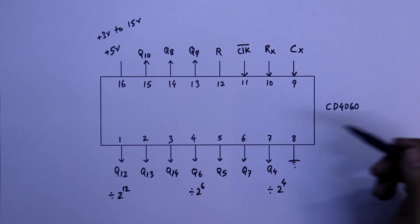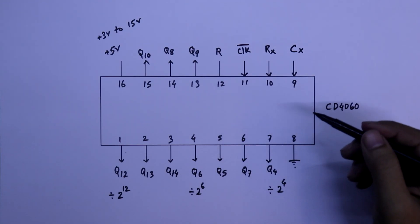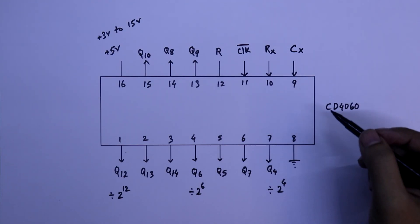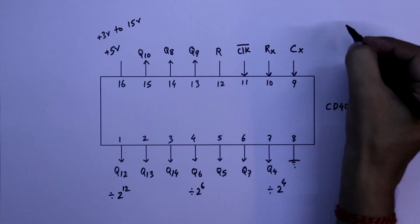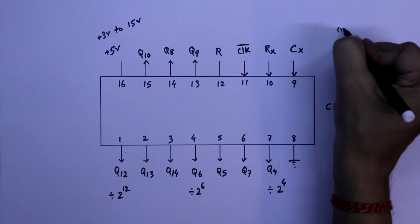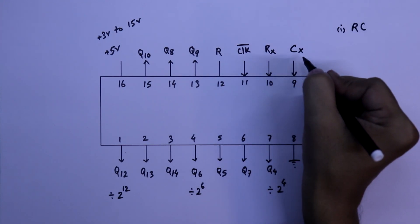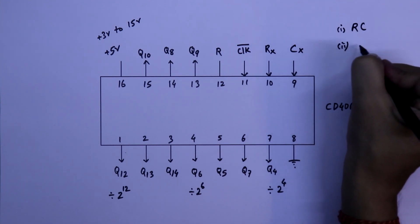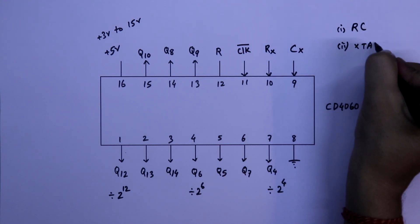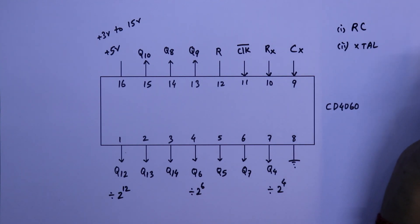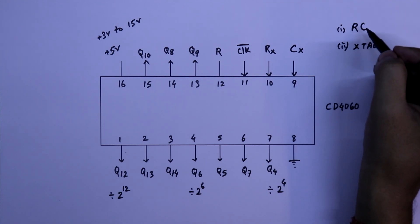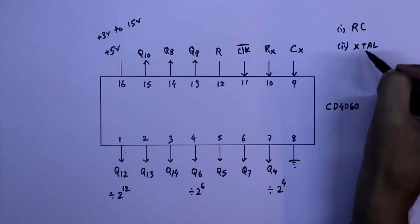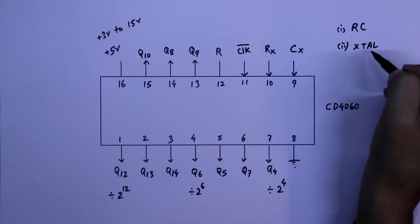We can use this IC to generate frequencies in 2 ways. The first way is with a resistor and capacitor. The other way is with a crystal oscillator. With the RC method, we can get our frequencies in approximate values, but with the crystal oscillator, we can get our frequency in accurate values.